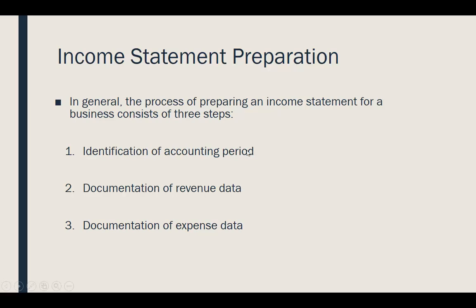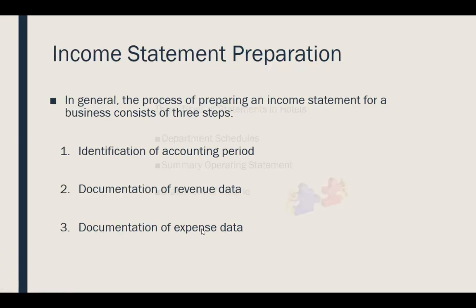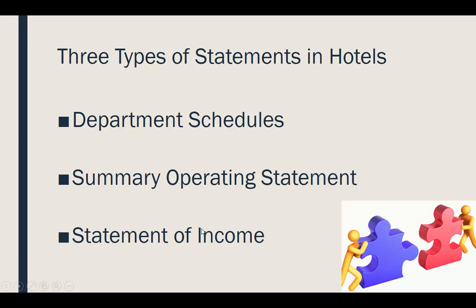That way we have a guide as to which revenues and expenses we want to look at. In lodging, there are three different types of statements that work together. The first are the departmental schedules. You then require this information to build your summary operating statement, which is used primarily by managers, which you then use to develop your statement of income, used mostly by owners and investors.